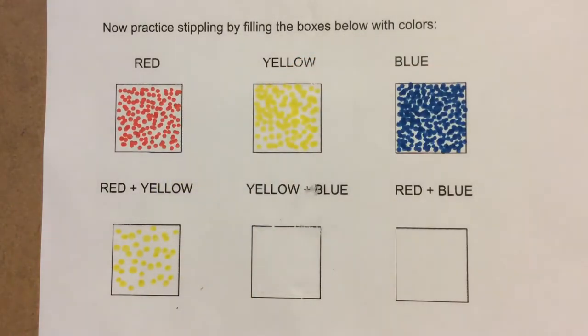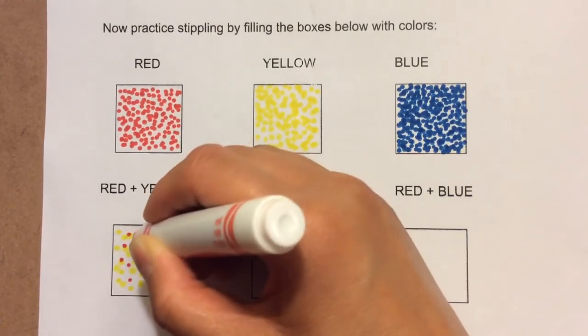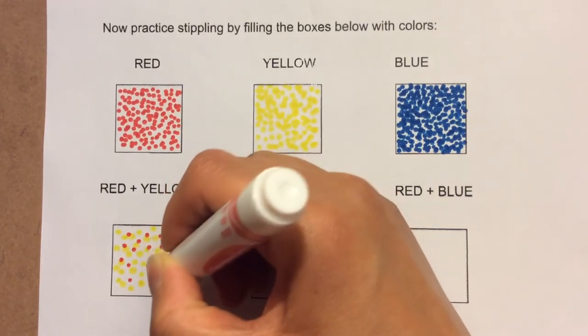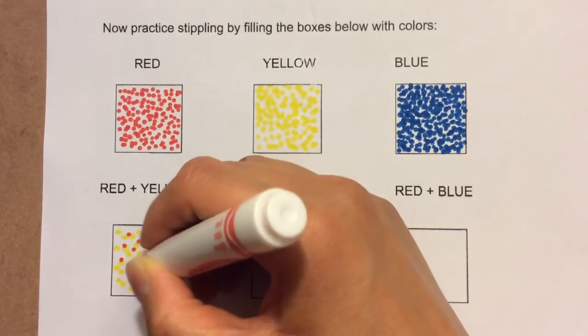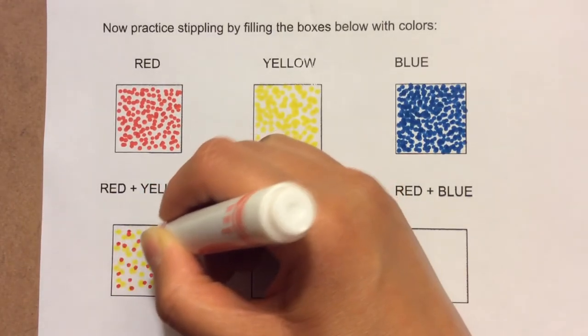Now, I'll go ahead with my red marker and go in the white spaces in between the yellow dots. And just like I said before, the more dots, the darker it looks. The less dots, the lighter it looks.